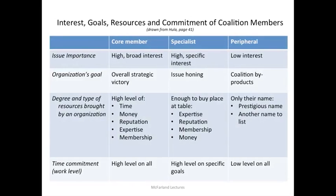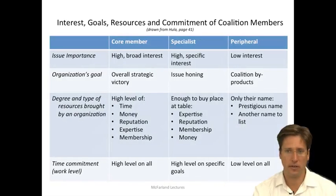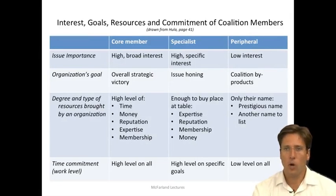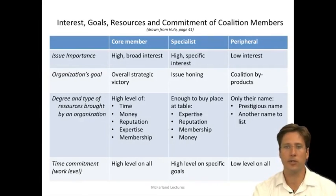Then there are the tagalongs — the peripheral members. They have the least interest, and their goal is to acquire coalition byproducts. They bring few resources but are willing to let others use their name. Notably, this model of coalitions ends in almost a Hobbesian view: only the most central, powerful actors invest the most into the coalition, while other less powerful actors invest much less — like the Leviathan cover where the king is composed of citizens but invests far more. The core players want to get the bill passed, the players want a paragraph, and the peripheral groups want a picture for their newsletter. Each lobbyist defines his or her essential interest, and a symbiotic relationship forms to hold the coalition together.